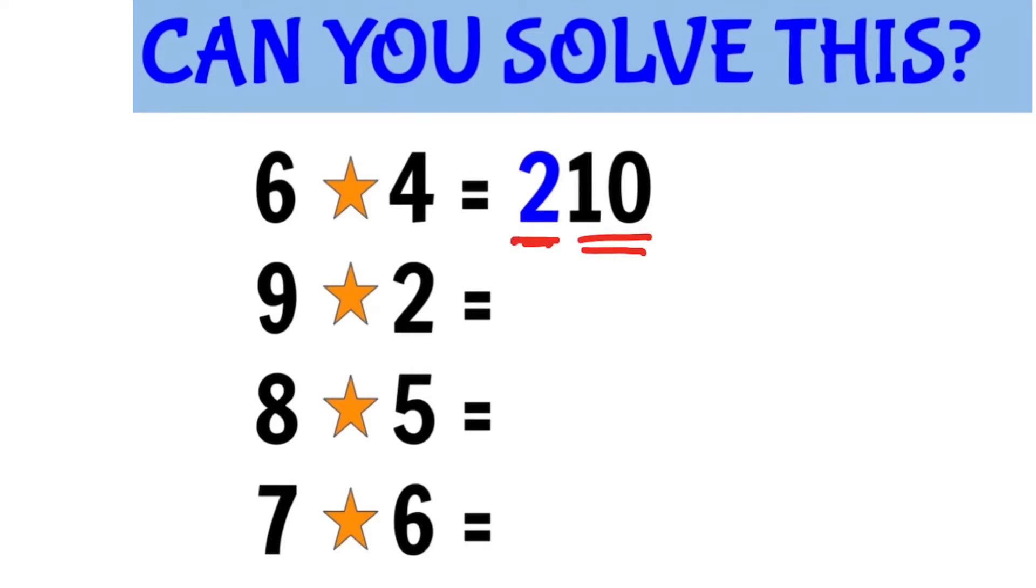So if you have 9 star 2, the difference is 7. When you add them, it's 11. So 9 star 2 is 711.